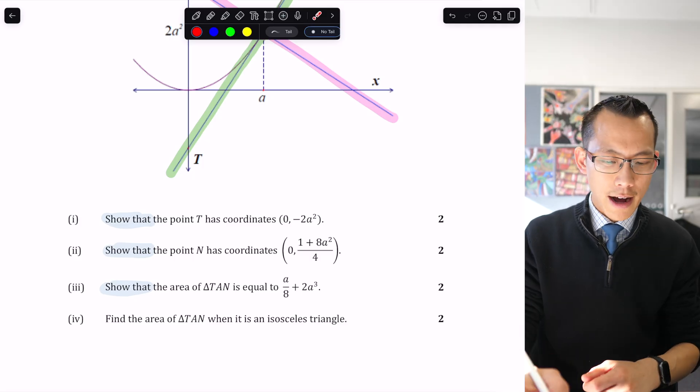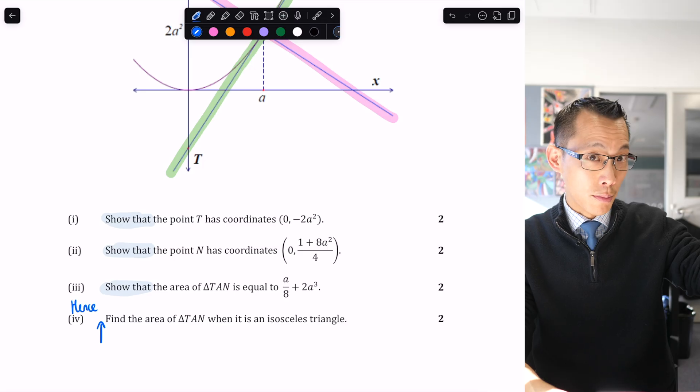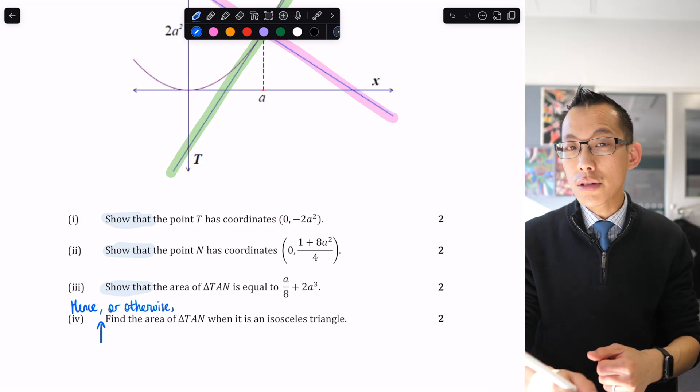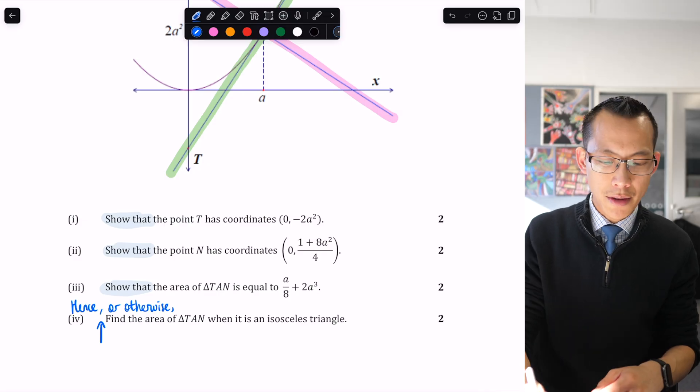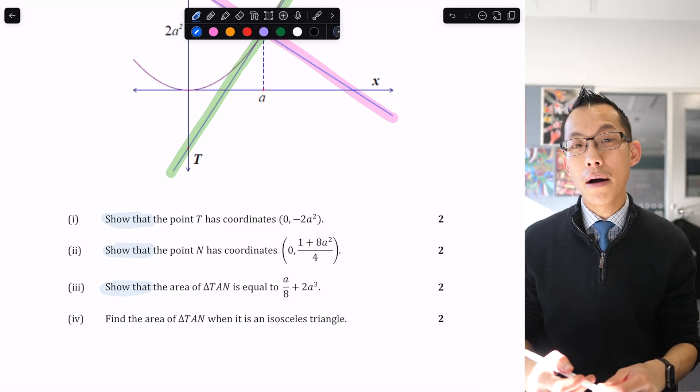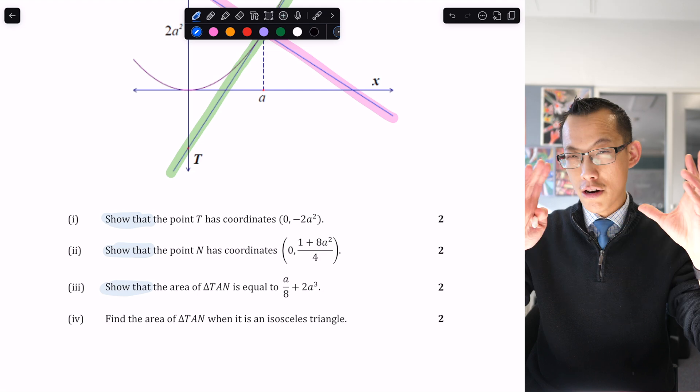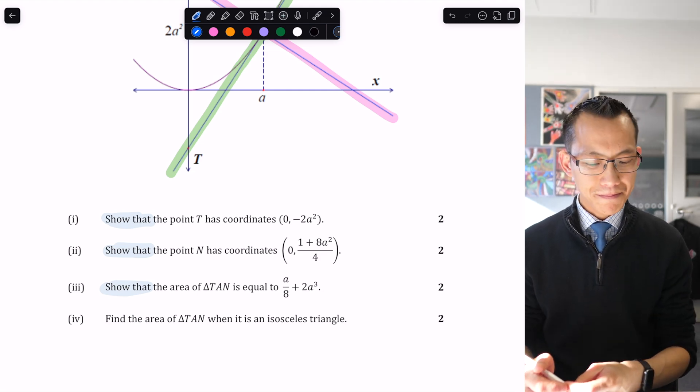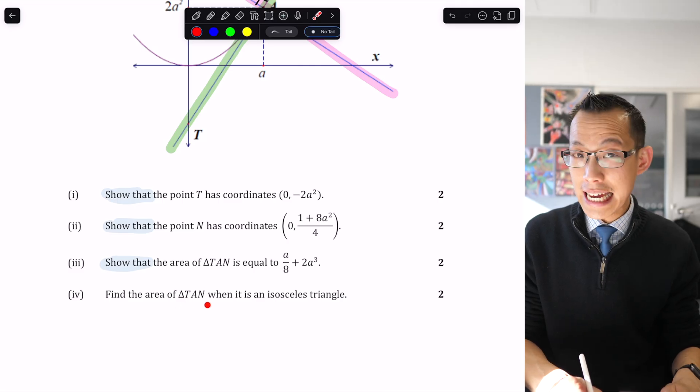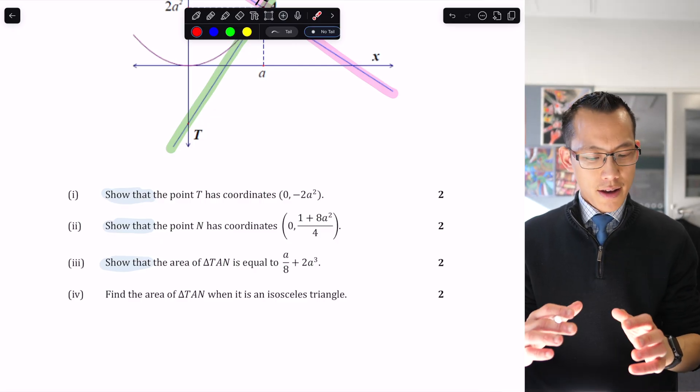Parts one, two, and three are stepping stones designed to help you get there. A clue is when a question begins with 'hence,' meaning use all the previous stuff. 'Hence or otherwise' means you can use the clues or find another way. In this multi-part situation, everything is building up to part four.